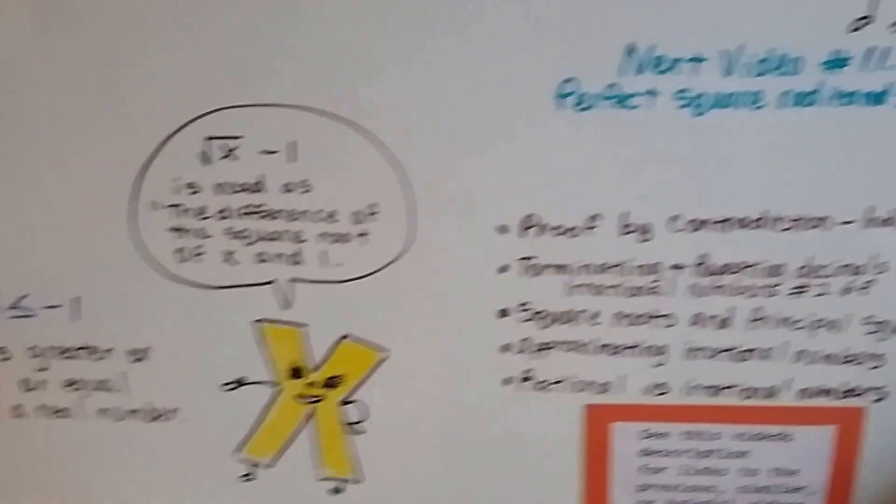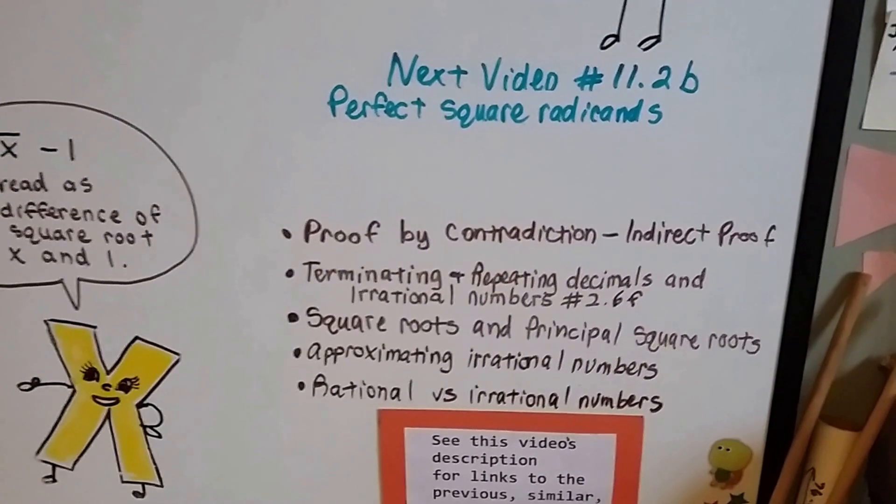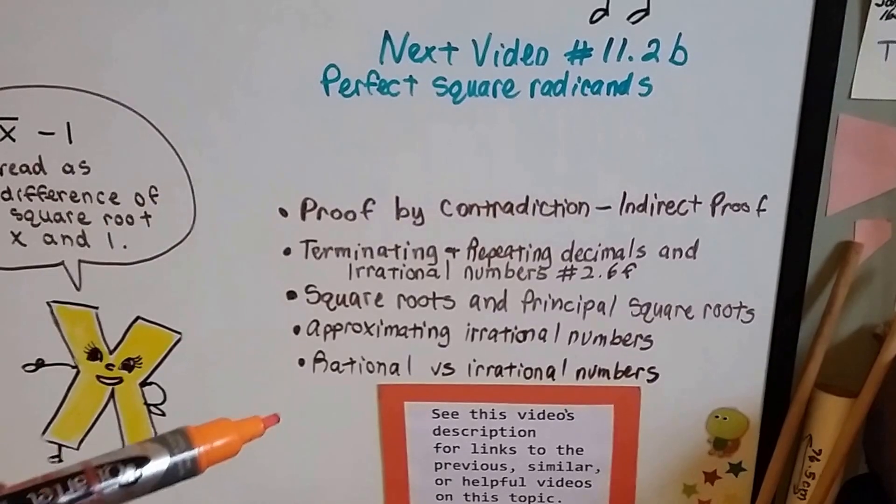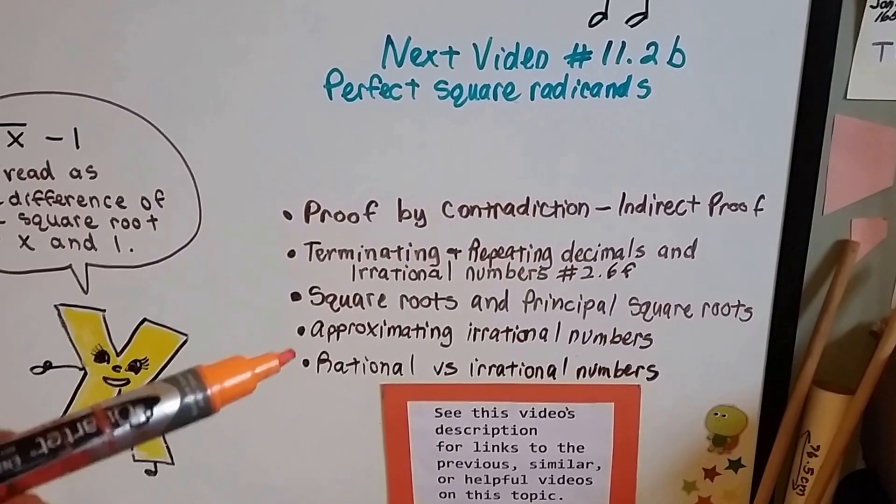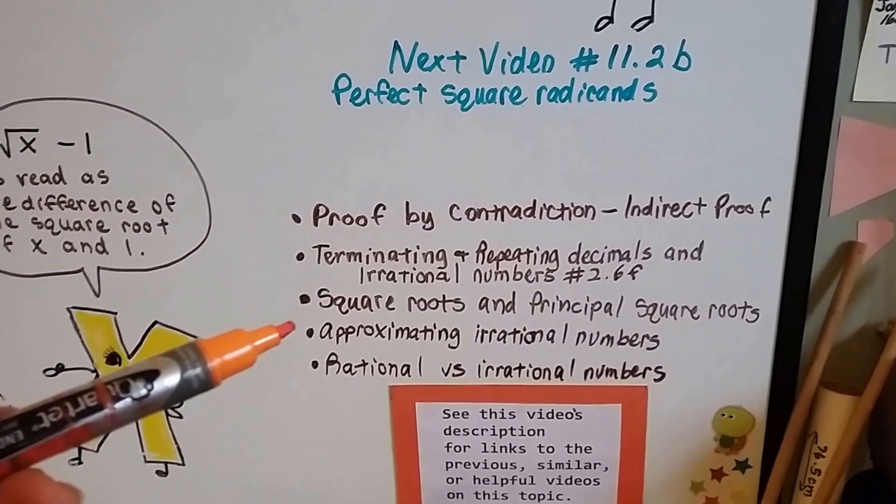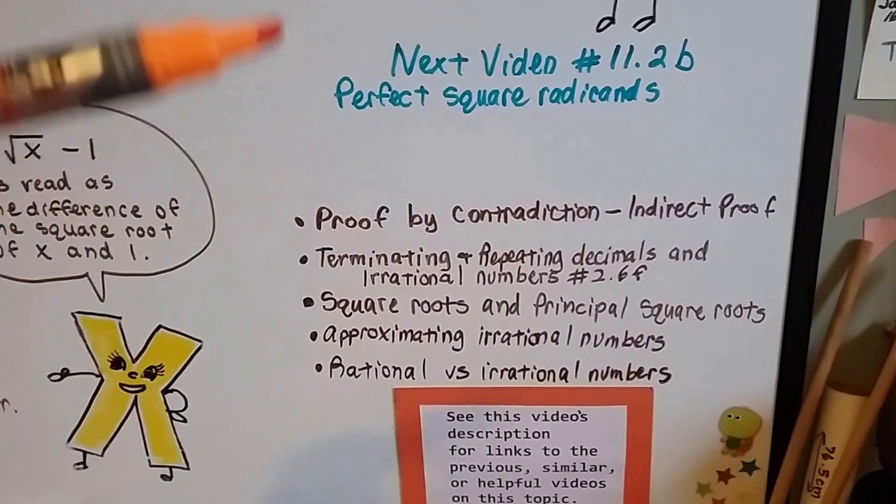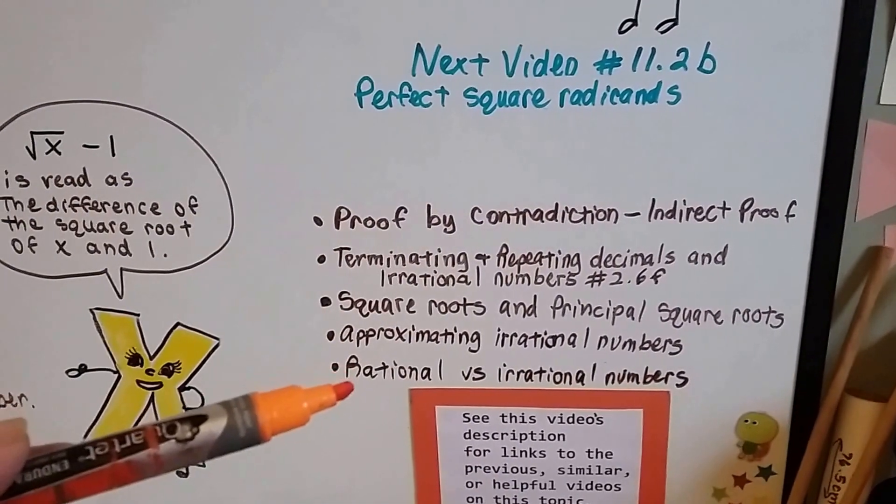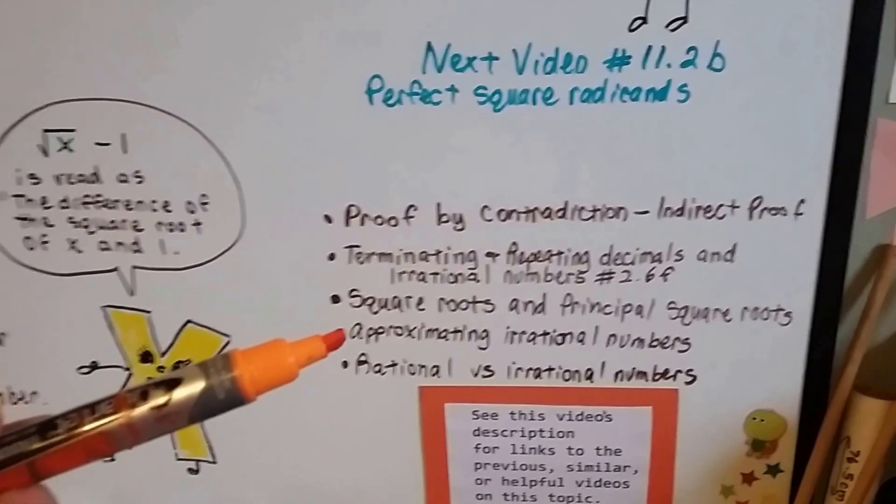Our next video, 11.2b, we're going to talk about perfect square radicands. And if you want to see any of the previous videos, we did proof by contradiction, an indirect proof. And it wasn't with a proof table. We just went down the line and showed you how to prove something by proving the opposite is wrong.